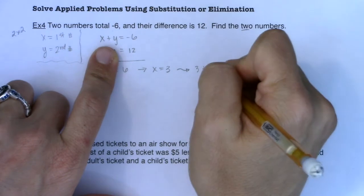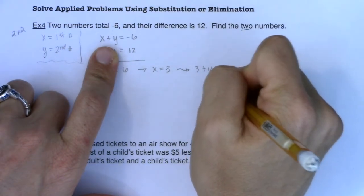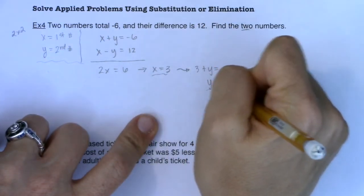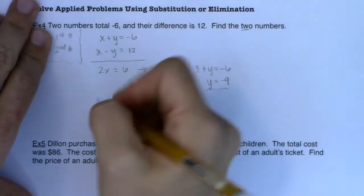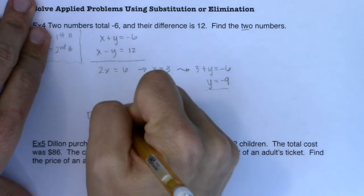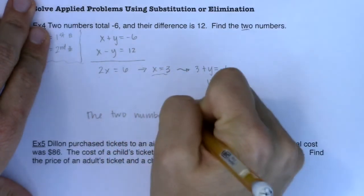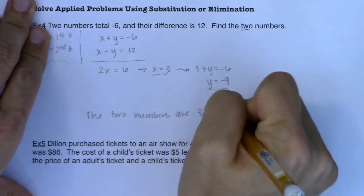negative six. When I subtract three, I get Y equals negative nine. So I have X is three and Y is negative nine. The two numbers are three and negative nine.